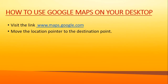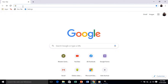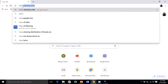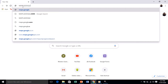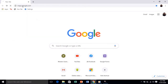Now, how to use Google Maps on your desktop. You have to first click on the link maps.google.com. To move to any destination point, you move the location pointer. Let me show you — to open the link, just type maps.google.com and press the Enter key.